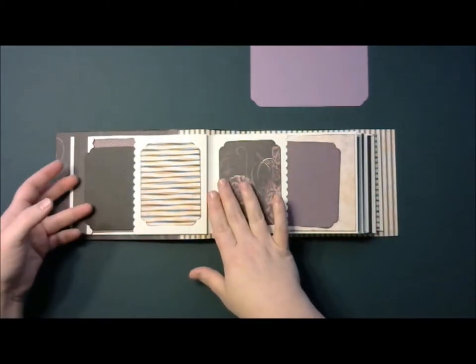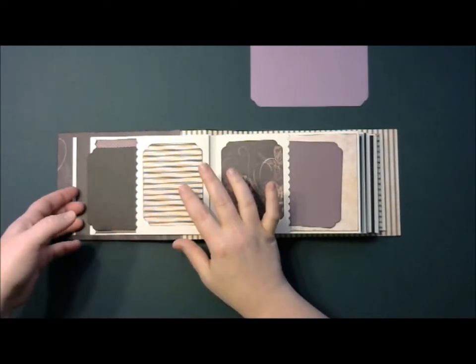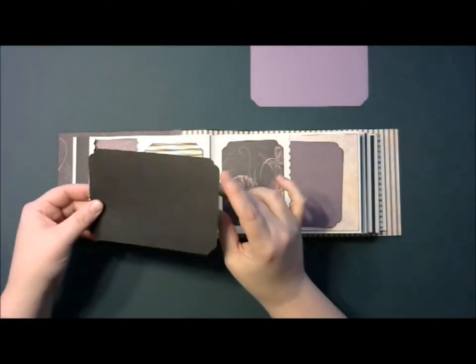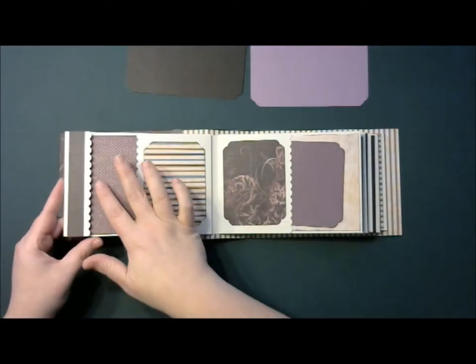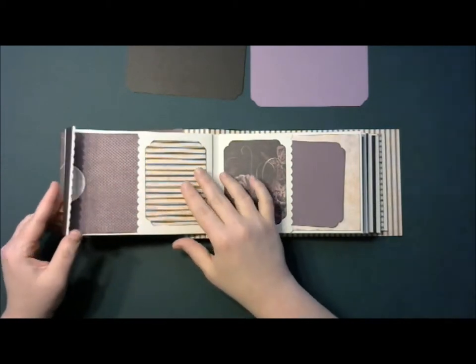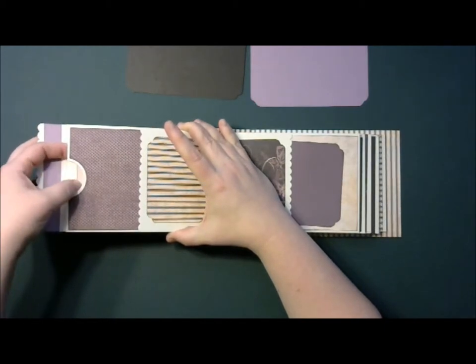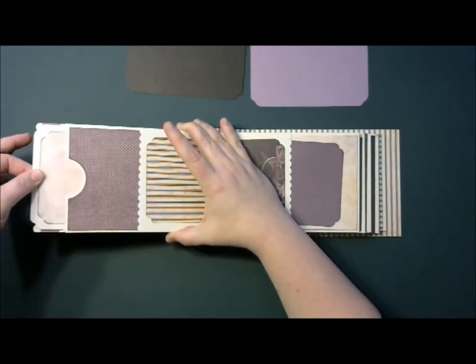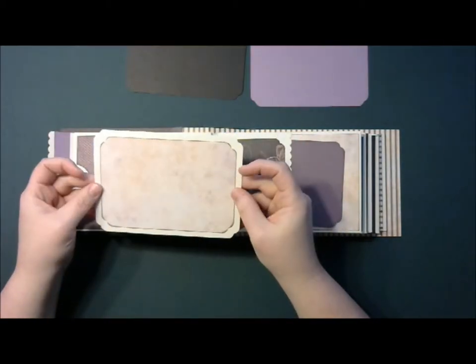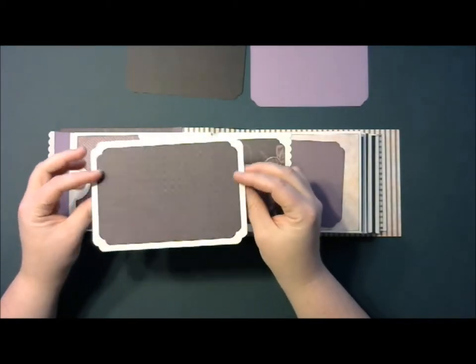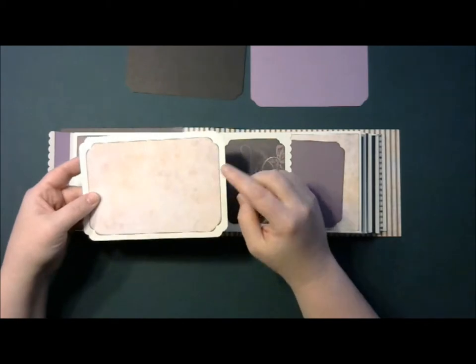When you turn the page, we get another page pocket with that scalloped border punch and your journaling spot. And another tag here for another 4x6 photo. And then that was holding down this flap here. And this flap opens up and contains this. I punched a notch in here so you can easily pull out a larger size tag with more of that moonlit paper designs on it. And again, these hold 4x6 photos.